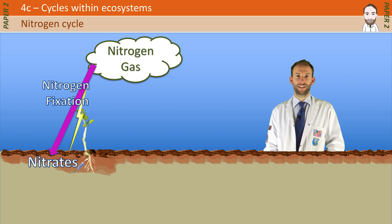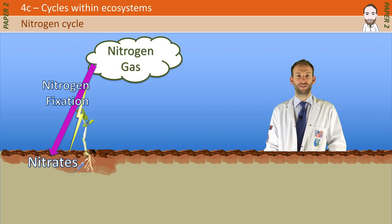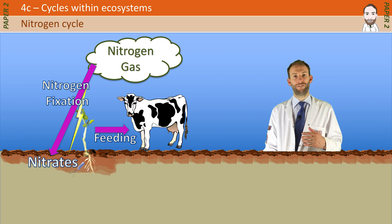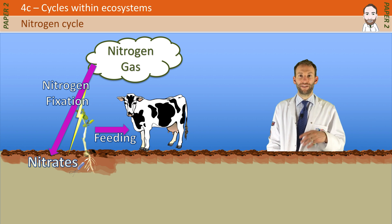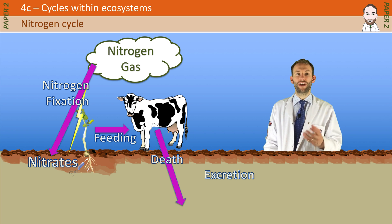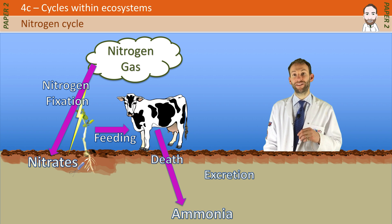Plants can use nitrates to make proteins and other structures. That can then get passed along the food chain via feeding. Animals and plants can die or excrete, and those nitrates stored in them can get returned to the soil in the form of ammonia.